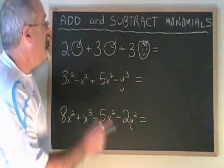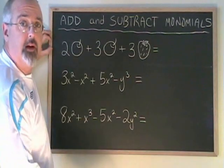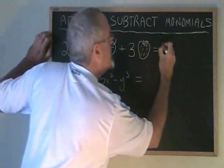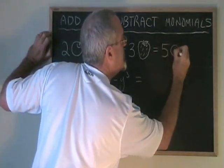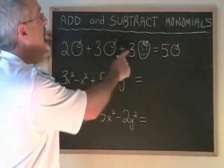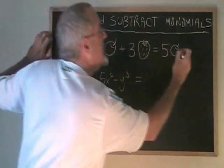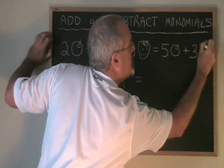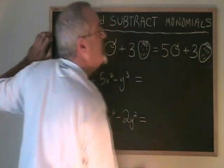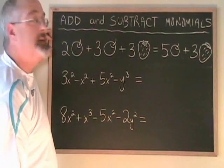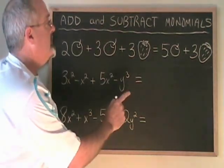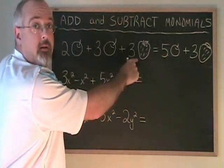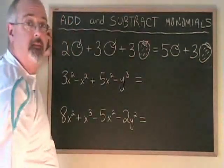If we want to keep it clear how many apples we have and how many strawberries we have, we say two apples plus three apples equals five apples, and the three strawberries remain expressed as three strawberries. The similar terms — apples — have been combined, and the dissimilar term — the strawberries — has been kept separate.